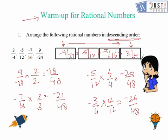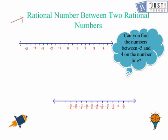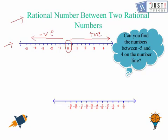Now we move ahead to the main topic: rational numbers between two rational numbers. First, let's look at a normal number line. Zero is the midpoint — numbers to the right of zero are positive and numbers to the left of zero are negative. This applies to rational numbers as well.